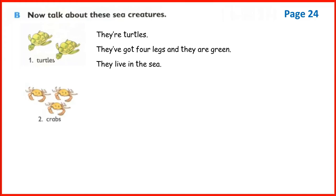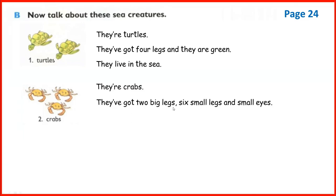Number two - what are these? They are crabs. Dear students, they have got two big legs and six small legs, and two small eyes. They are crabs. They have got two big legs, six small legs, and two small eyes. They live in the sea. Crabs are sea animals. Now you repeat: they are crabs, they have got two big legs, six small legs, and two small eyes. They live in the sea.